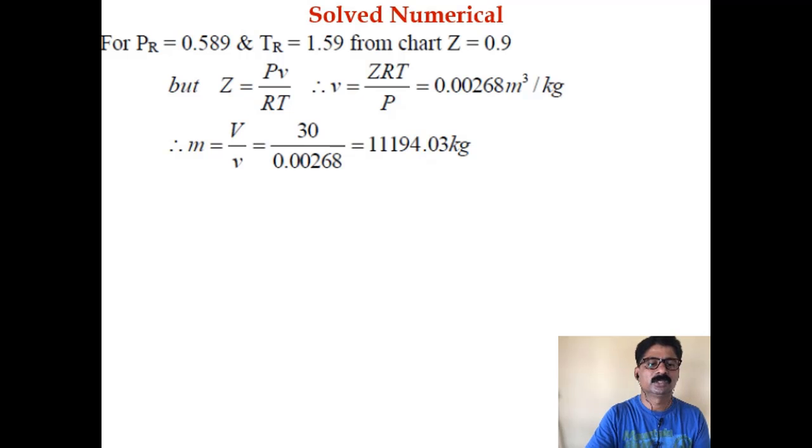Using these two values, PR and TR, you have to find out Z from the compressibility chart. As all of you know, Z equals PV by RT, so you have to find out specific volume here. V is 0.00268 cubic meters per kg. Now mass is nothing but total volume by specific volume. Total volume is 30, specific volume is 0.00268, so you will get 11194.03 kg.